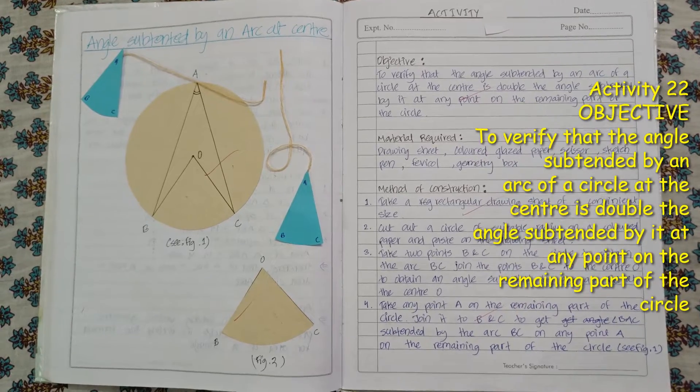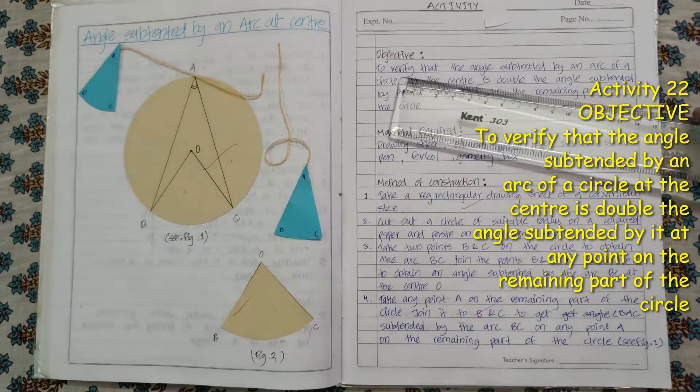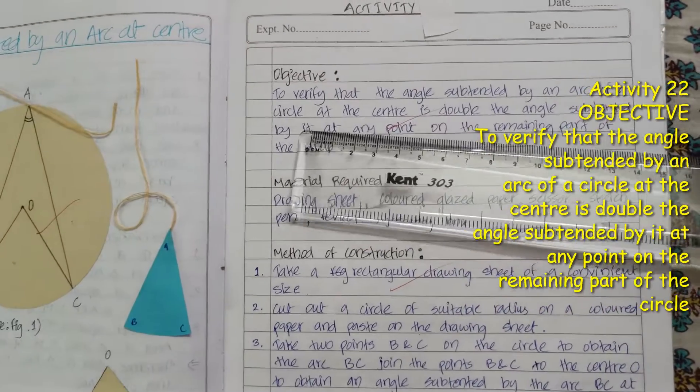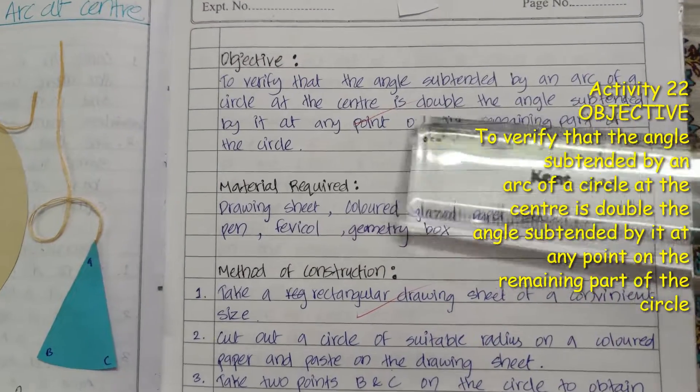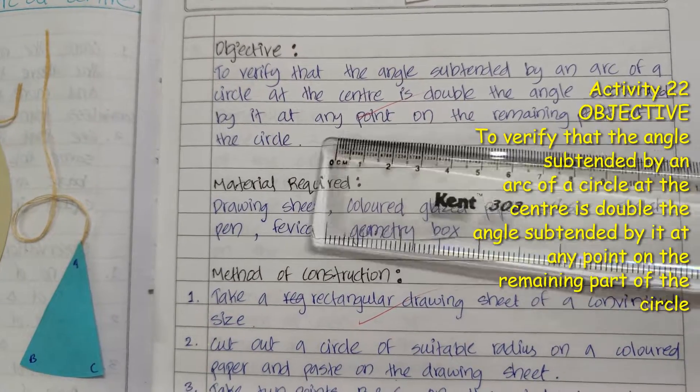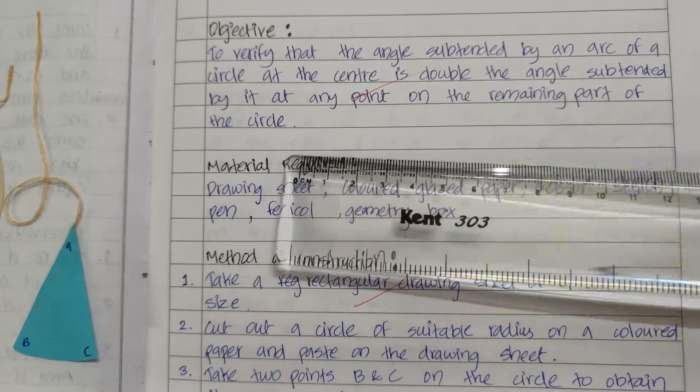Today we will perform an activity of class 9. Objective: to verify that the angle subtended by an arc on a circle at the center is double the angle subtended by it at any point on the remaining part of the circle.